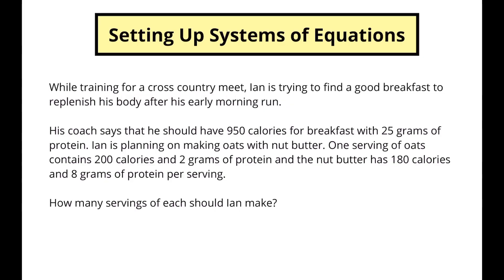While training for a cross-country meet, Ian is trying to find a good breakfast to replenish his body after his early morning run. His coach says that he should have 950 calories for breakfast with 25 grams of protein. Ian is planning on making oats with nut butter. One serving of oats contains 200 calories and 2 grams of protein, and the nut butter has 180 calories and 8 grams of protein per serving. How many servings of each should Ian make?